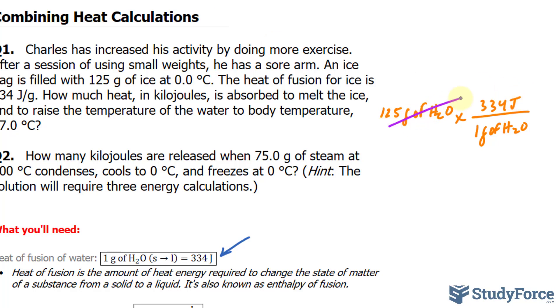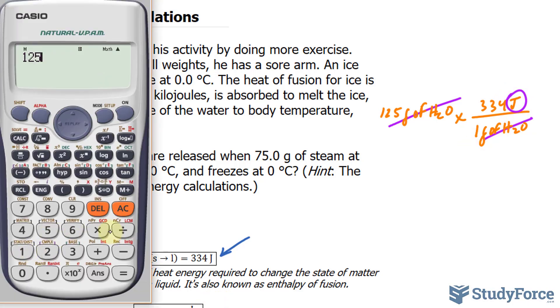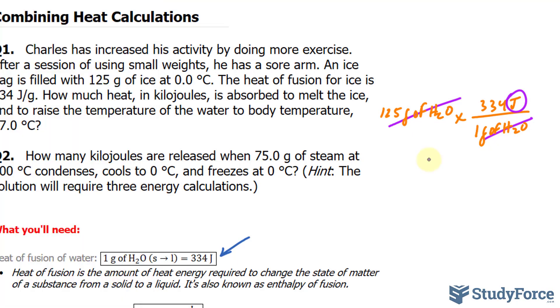Notice what happens. This unit and this unit will completely cancel out, leaving us with the amount of joules. So 125 times 334, that gives us 41,750. Now I don't want to round anything just yet, because there's more calculations to come. I'll write down 41750 joules. And remember, this is three significant figures. A good way to keep track is just to put a dot underneath the last significant figure.